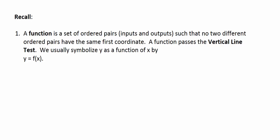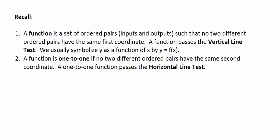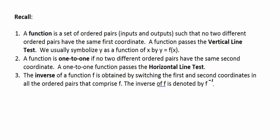A function passes the vertical line test. So if you graph a function, any vertical line can pass through at most one point. We usually symbolize a function as y = f(x). Number two: a function is one-to-one if no two different ordered pairs have the same second coordinate. A one-to-one function passes the horizontal line test — no horizontal line passes through more than one point.